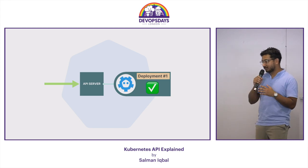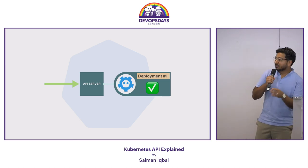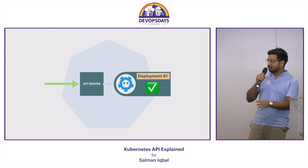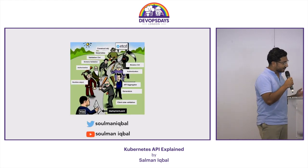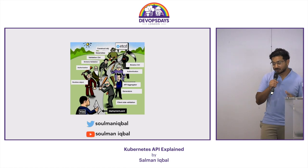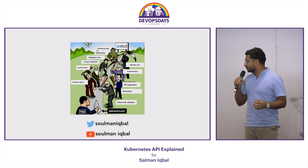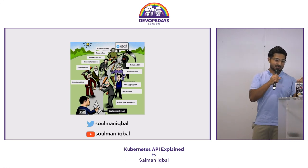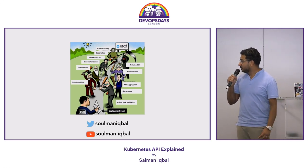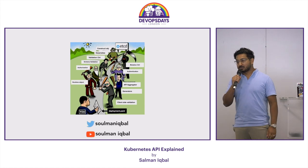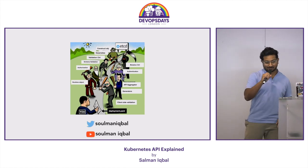After all of that, your request eventually gets written into etcd, the database of the cluster. Once it's inside, the other components kick in to spin up or kill a pod. All these things are happening inside the API server — if any of them go wrong, your deployment doesn't work. Thank you very much, my name is Salman Iqbal and I work for Apio.